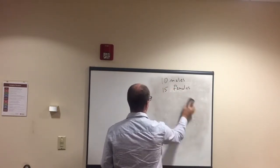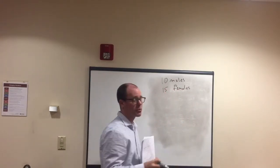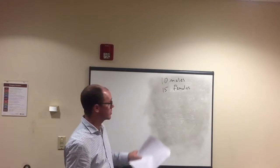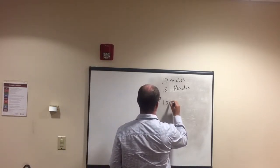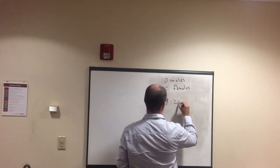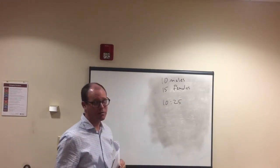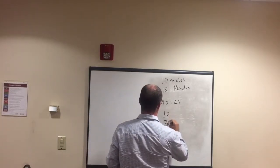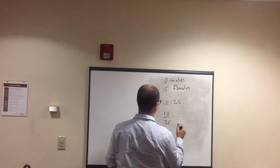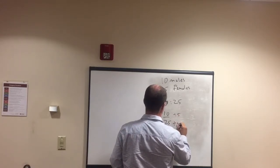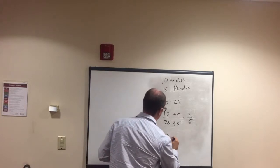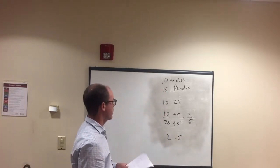You have to read the questions carefully — a big deal in test taking. What if it said: what's the ratio of males to everybody? That's not two to three anymore. It's 10 males out of everyone, including males: 10 plus 15 is 25. So 10 over 25, divide by five, equals two-fifths — the ratio of males to everybody is two to five.